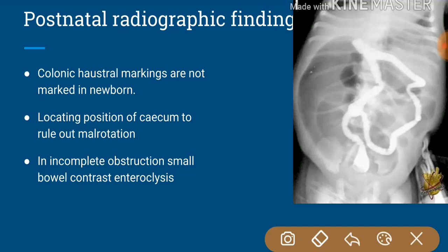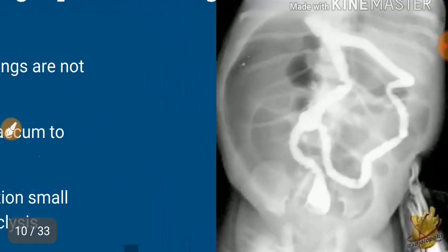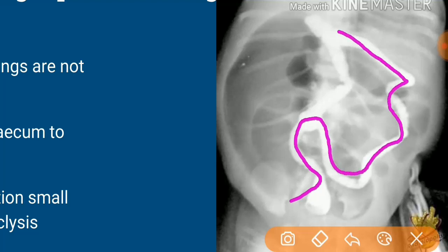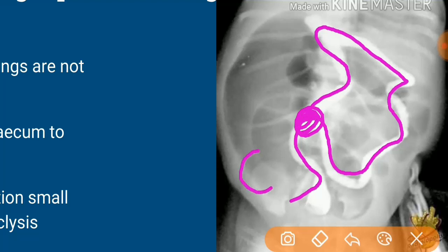To distinguish, we put contrast into the colon. The picture of the colon will show an unused colon appearance. When we put the contrast in, with a small amount of contrast we get this picture. This is the supposed cecum — cecum is supposed to be here. But why has it shifted? We have to look for the position of the cecum in the case of ileal atresia.